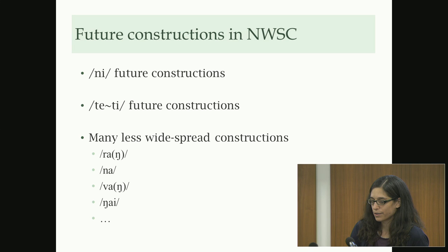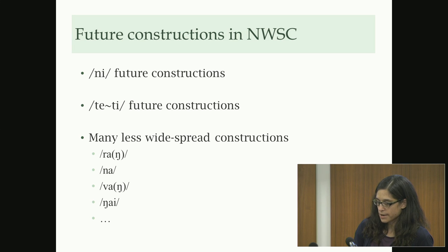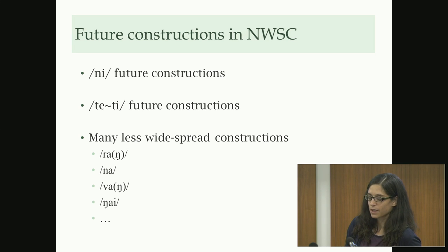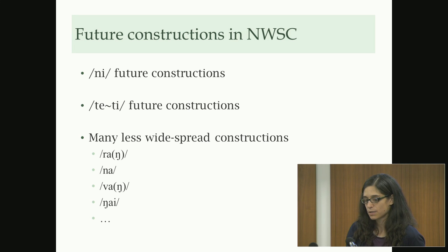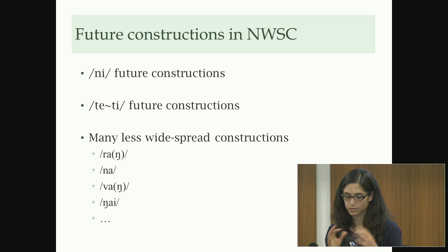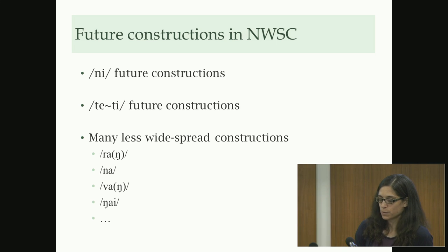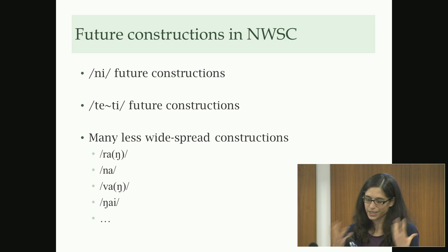I'll start with two constructions that are particularly widespread. On the one hand, a construction I call the 'ni/knee' future construction, based on the form 'knee' which you'll recognize as the equational copula. The other type consists of a form 'te' or 't', which is actually the verb 'to say'. I'll go into more detail on that one, as it's something I worked on from Monsang in particular.